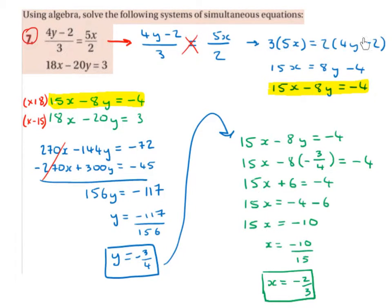I'm going to write that over here, 2 times 4y minus 2 and then 3 multiplied by 5x. I'm going to write that here, 3 by 5x.